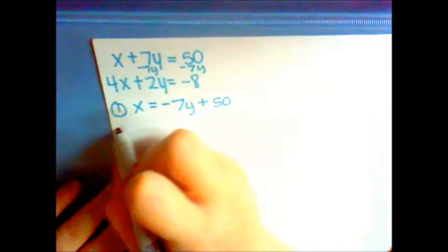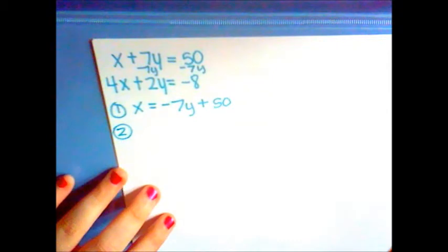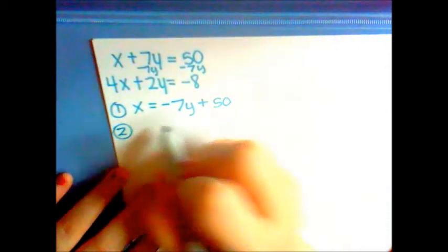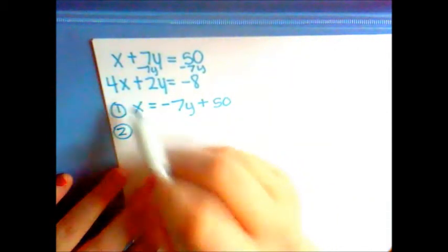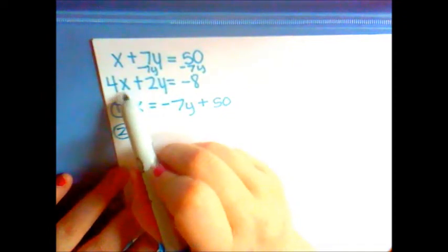We get x equals negative 7y plus 50 and put it in for the x in the second problem.